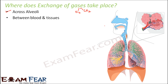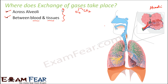The exchange of gases occurs across the alveoli and it also occurs between the blood and the tissues. Here, where the alveoli is, you can see the blood vessels are closely located to the alveoli. So exchange occurs between alveoli and the blood vessels. Blood carries the gases to different parts of the body, and again exchange occurs between the blood and the tissues. So these are the two sites where exchange of gases occur during the process of respiration.